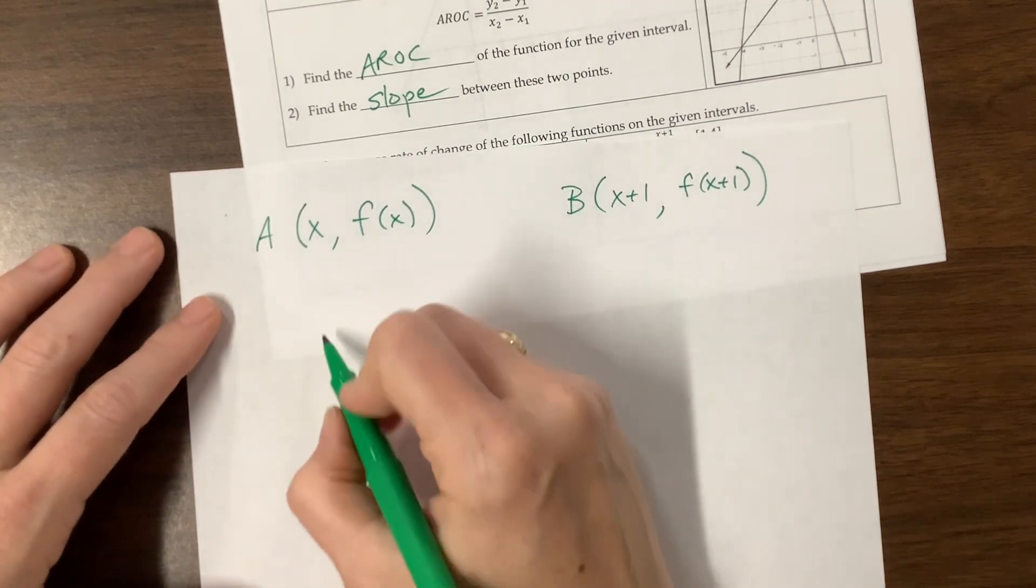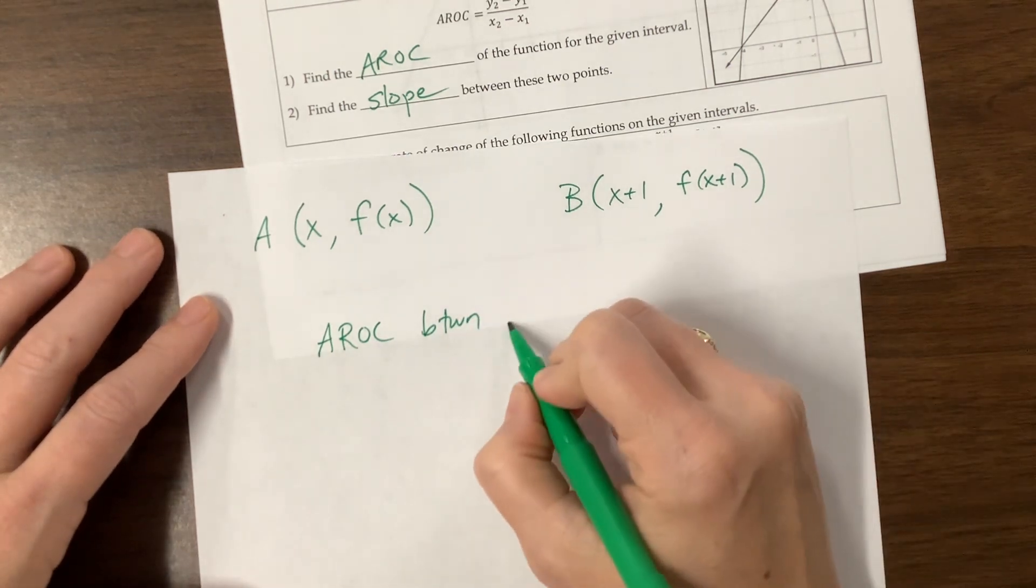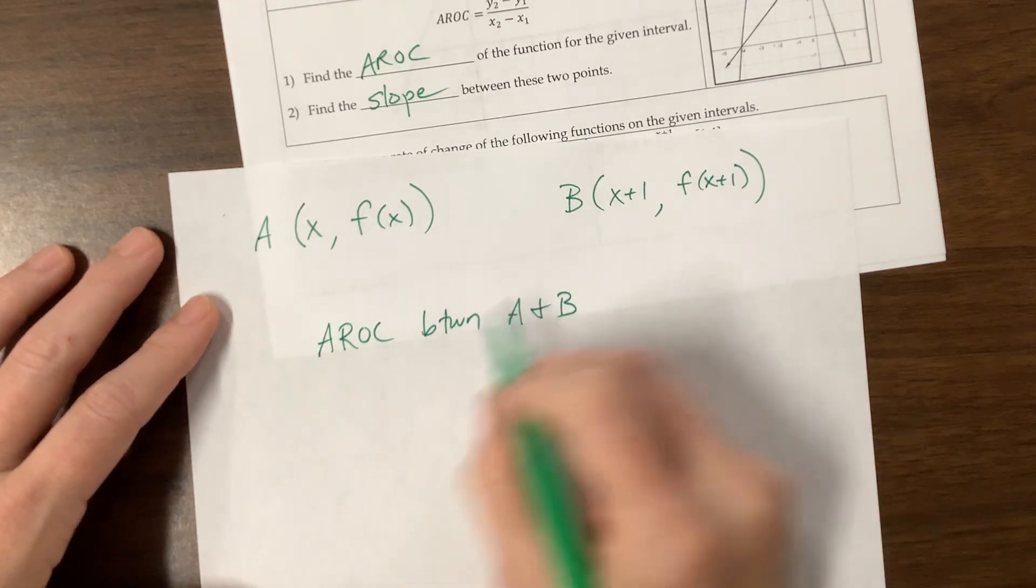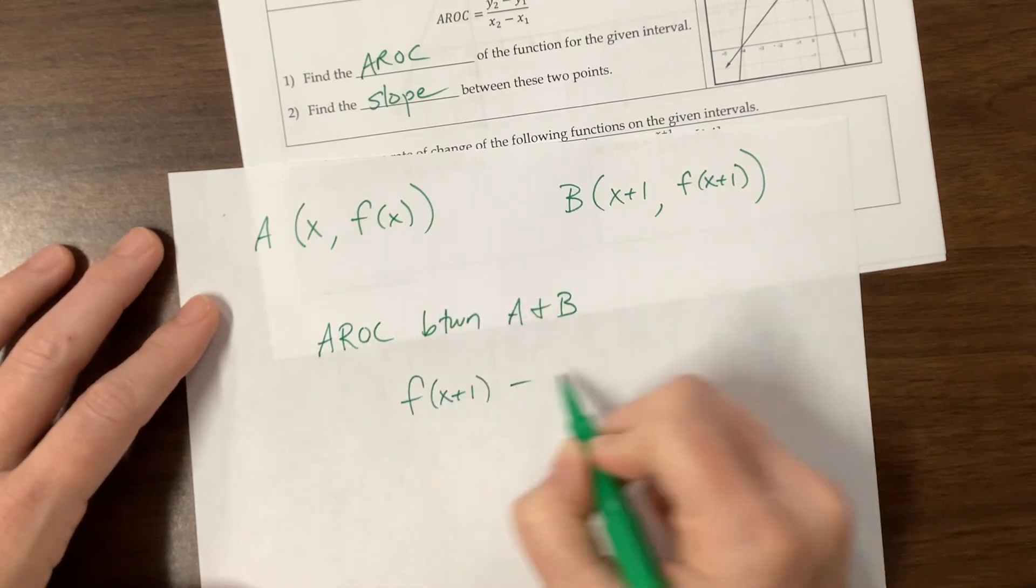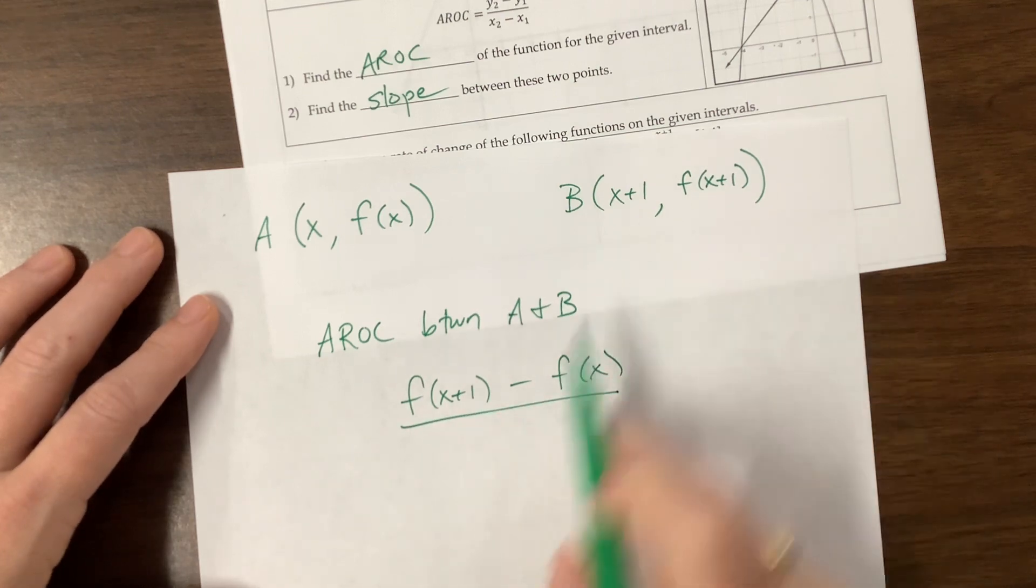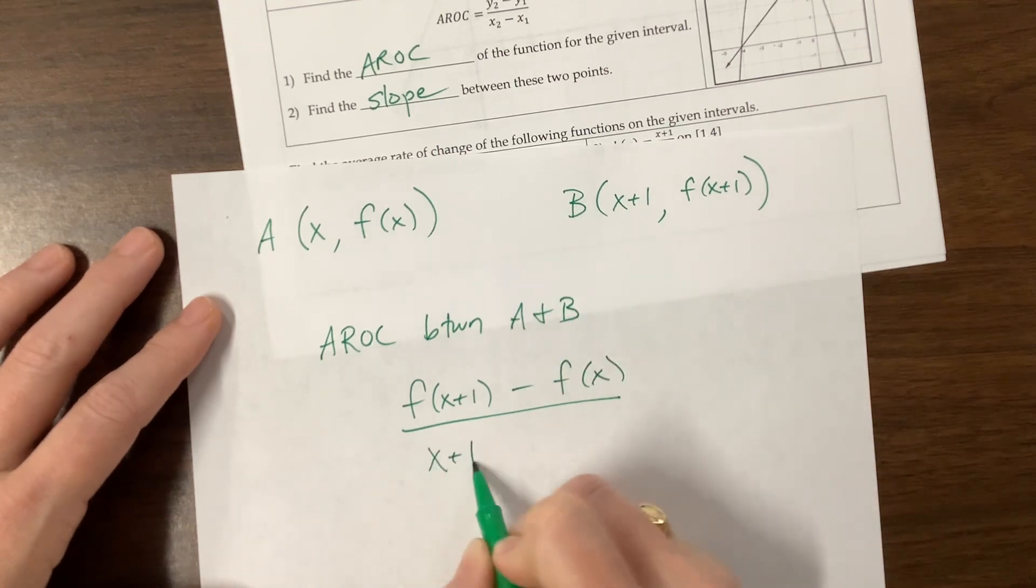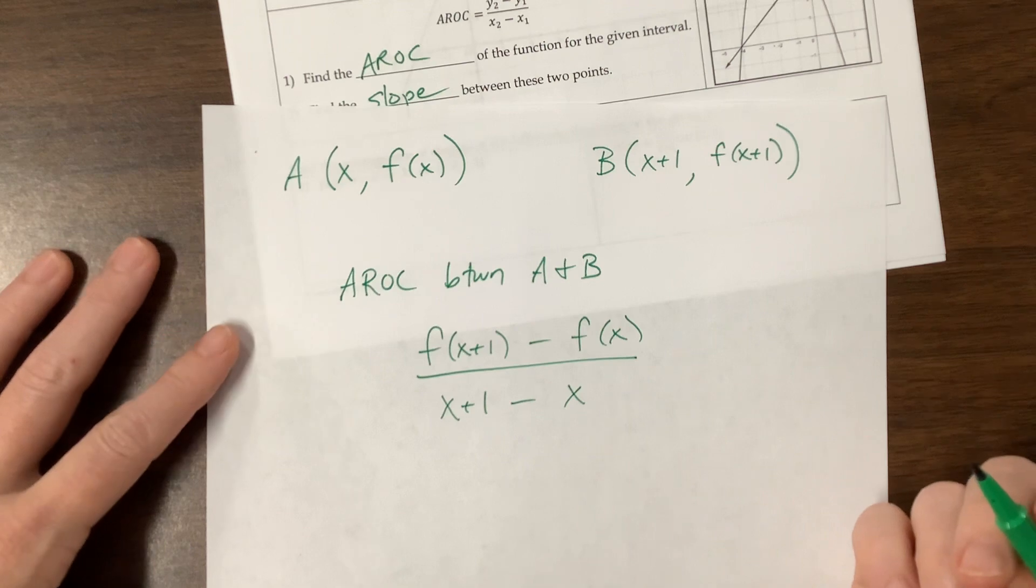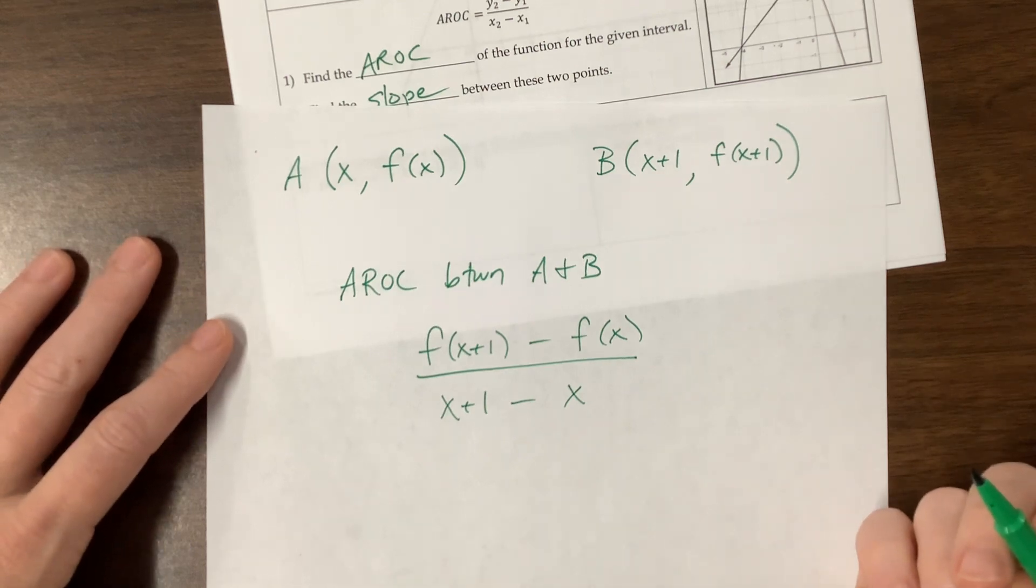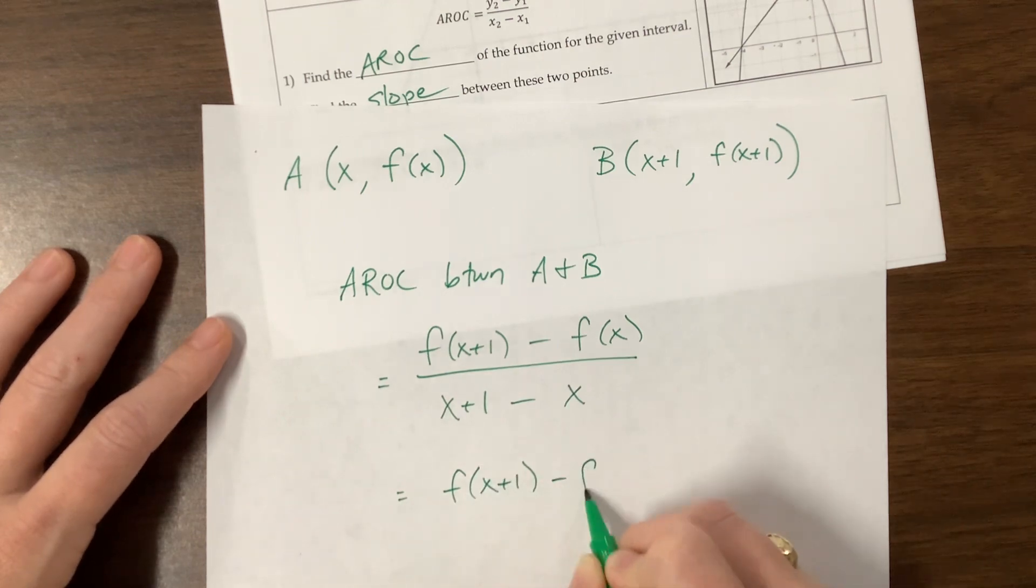So if I want to find the average rate of change between, sometimes I abbreviate between like that, between A and B, what I would do is I will take these y values, subtract them, so f of x plus 1 minus f of x divided by the x values. Okay, so since I started with this y value, I need to start with this x value. And I'm going to subtract away that x value. Notice what happens here. I have an x plus 1 minus x just leaves me with 1. We don't need to write a 1 in our denominator. We can, but we're efficient, so we choose not to. So this would be equal to f of x plus 1 minus f of x.